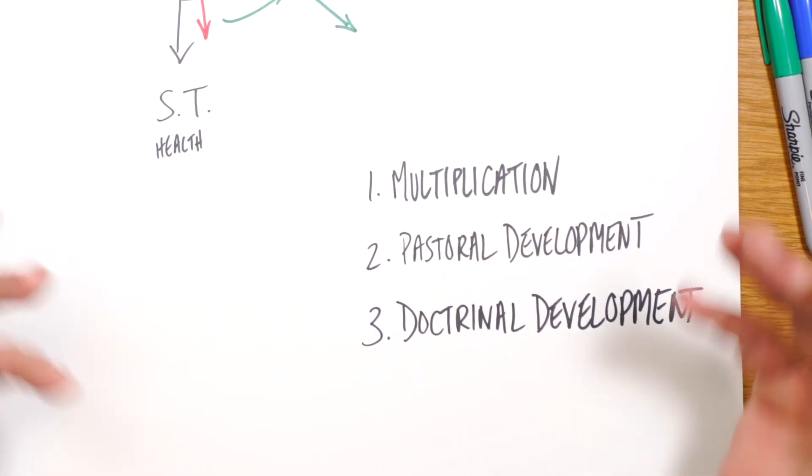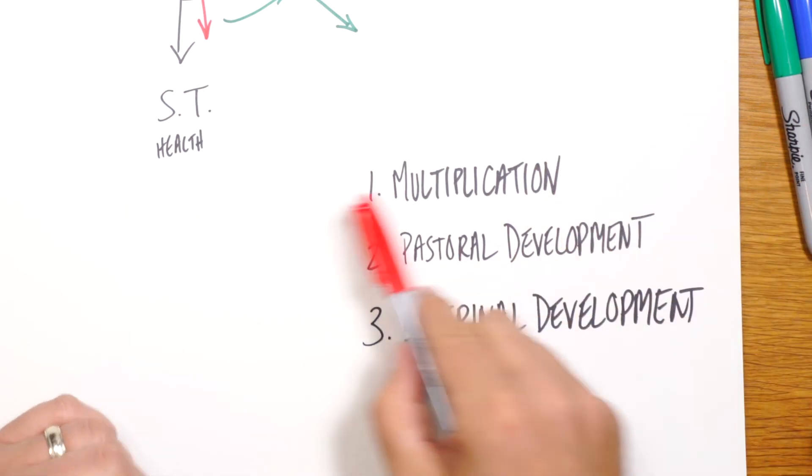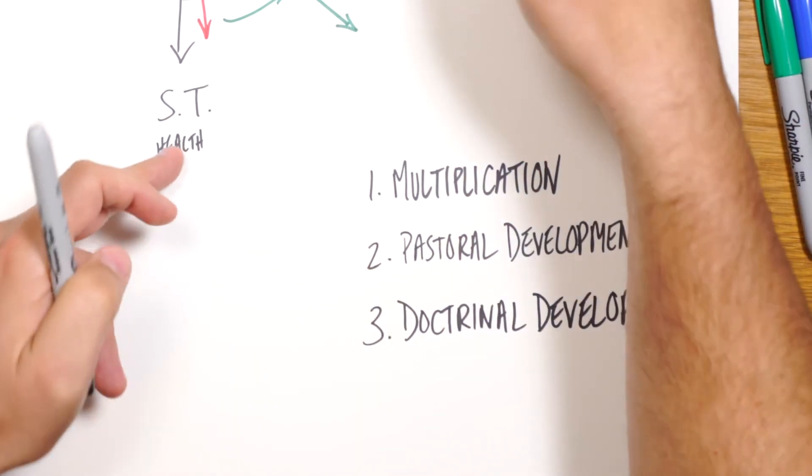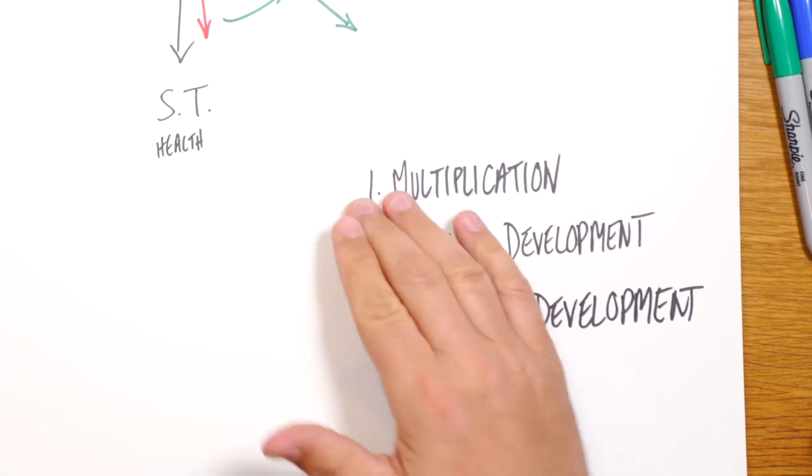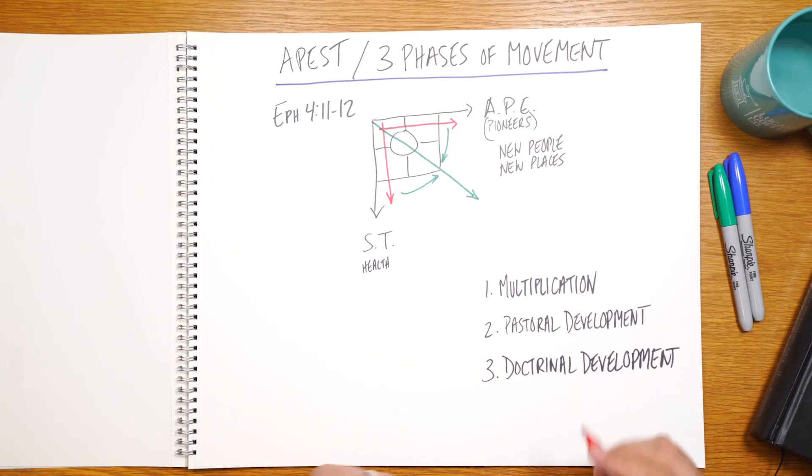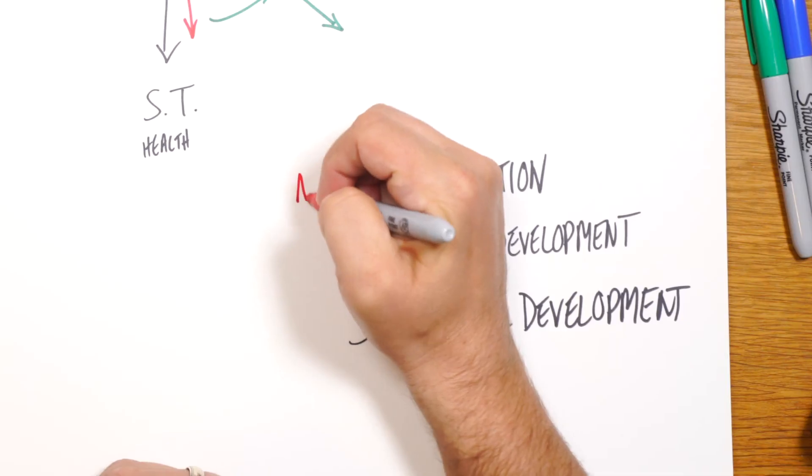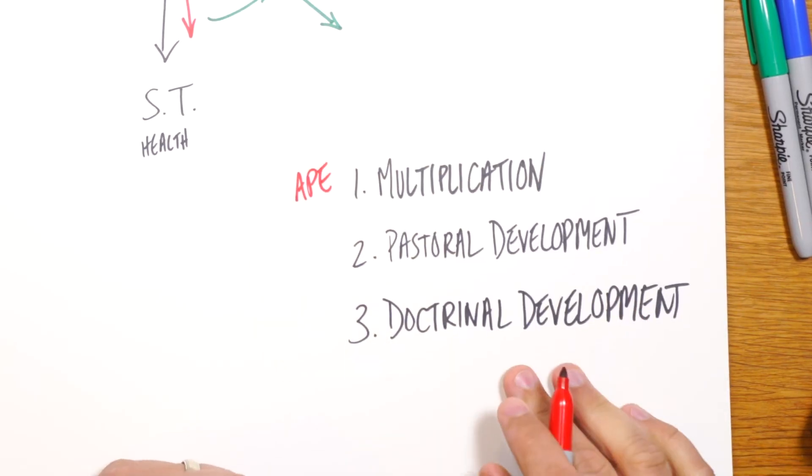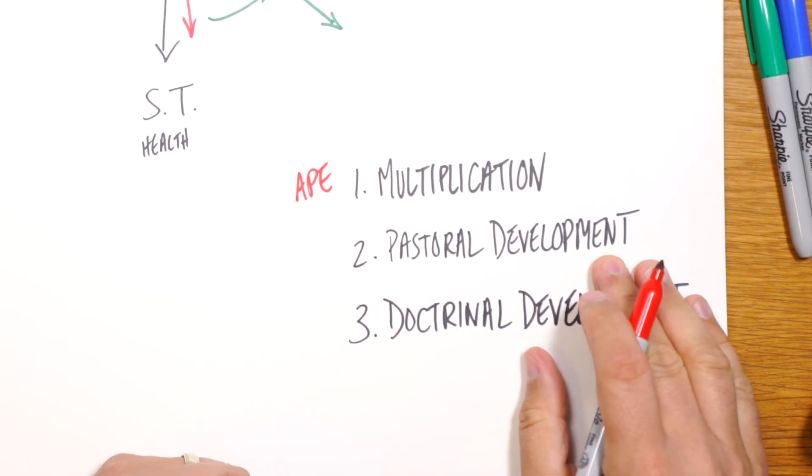So these are the three phases we're seeing now within our four fields training. Let me just say this. Which of these, as we're considering the APEs and the shepherd teachers, which of these two you think would be more heavily involved in the multiplication phase? That's right, the APEs.